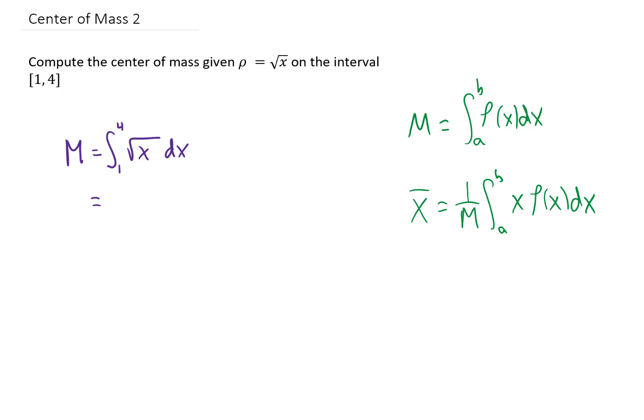To actually do the integration, it's going to make sense to rewrite this square root of x as x to the one-half power. Then we can use the power rule to integrate. That means adding 1 to the power of one-half to give us x to the three-halves, and then dividing by that three-halves is the same as multiplying by two-thirds. We can plug in the upper and lower limits of integration, and that'll give us the mass.